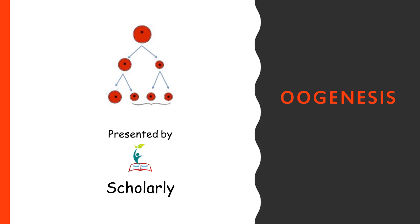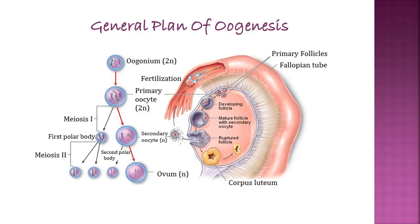The topic of this presentation is oogenesis. Oogenesis means formation of egg and we will discuss this process in two steps. First we will discuss the general plan and then we will discuss the detailed plan of this process.